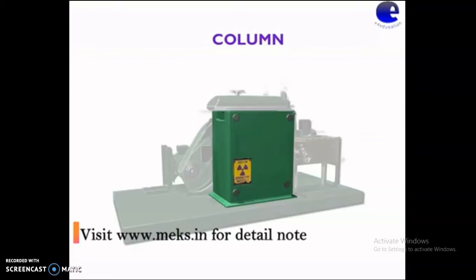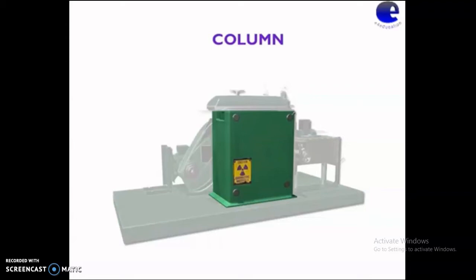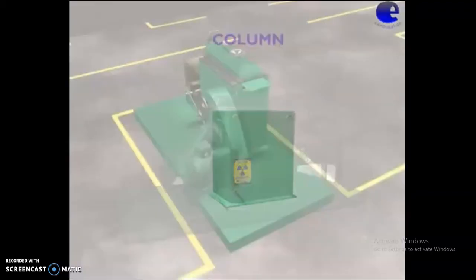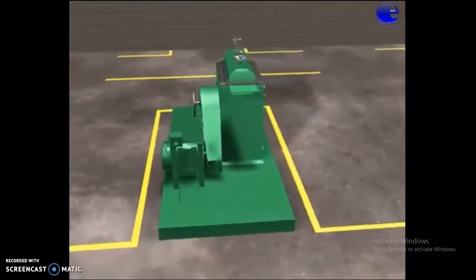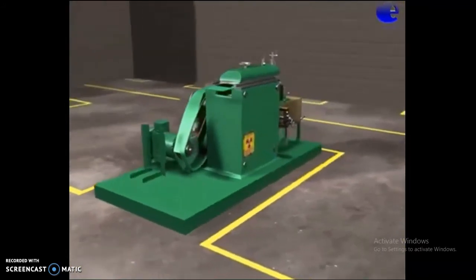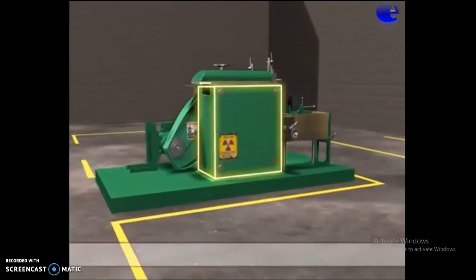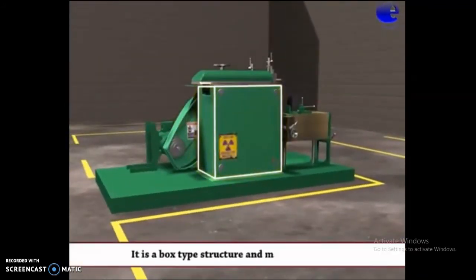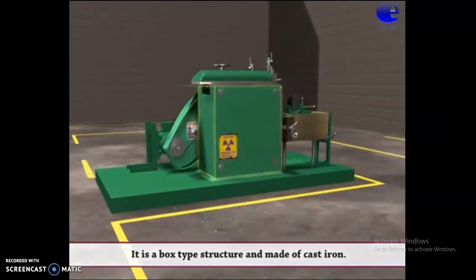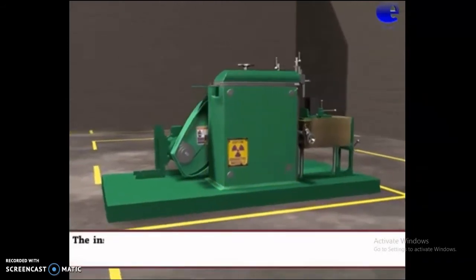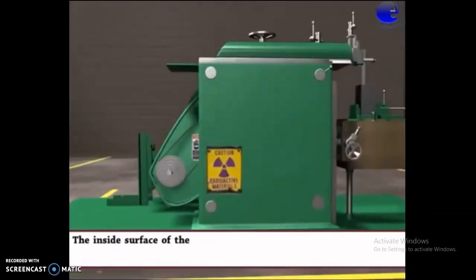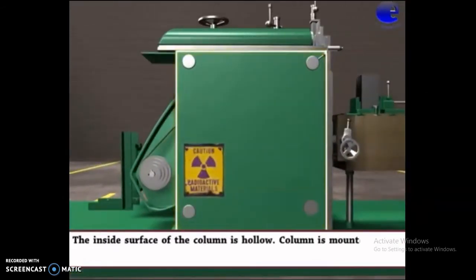Now we will see the column. In 3D view, the column is a box type structure and is made of cast iron. The inside surface of the column is hollow. The column is mounted on the base.